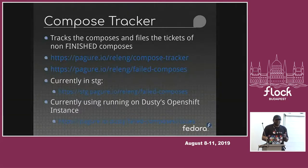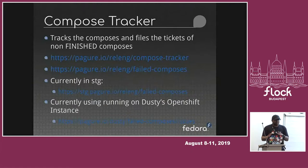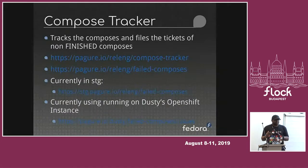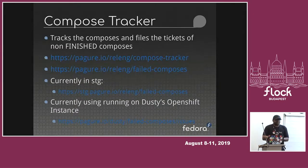Doomed means it's a complete failure. Finished incomplete means it sort of finished but didn't complete the generation of some images, probably ones which are not release blocking. Those are the sort of things it will track — for example, in spins, except for KDE, any other spin is not release blocking. So when we run the compose, if cinnamon fails, we will still publish those composes out because cinnamon is not release blocking. We want to track all those things as well.